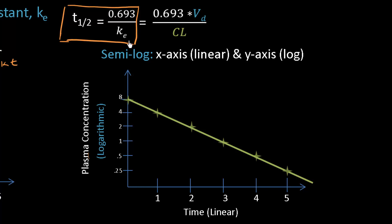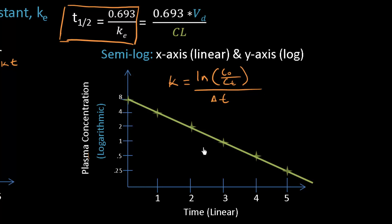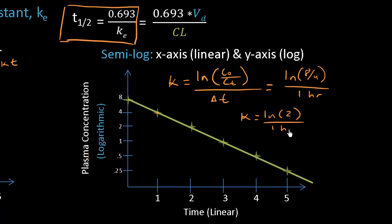How do you solve for the first order elimination rate constant from a graph? One way is to figure out the half-life, but another is that k equals the ln of your initial concentration divided by your concentration at time t, all over the time elapsed between those two points. For example, using concentrations 8 and 4 over 1 hour: k equals ln(8/4) divided by 1 hour, which is ln(2) over 1 hour, giving k equals 0.693 per hour.